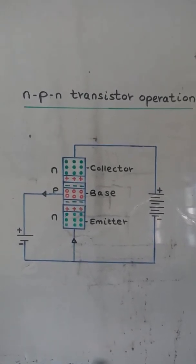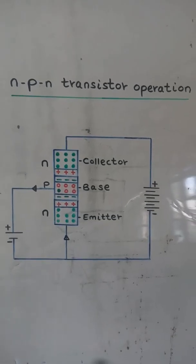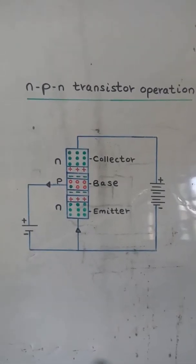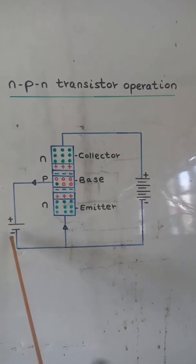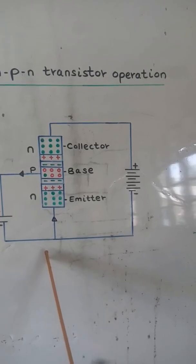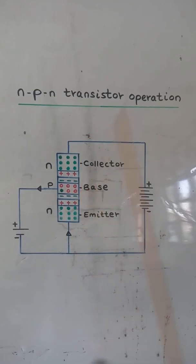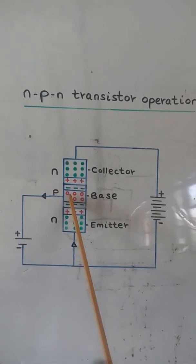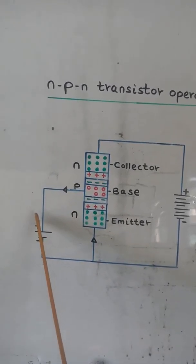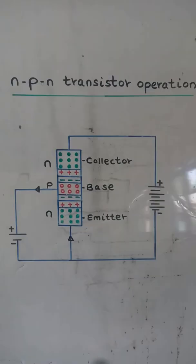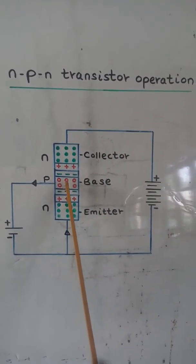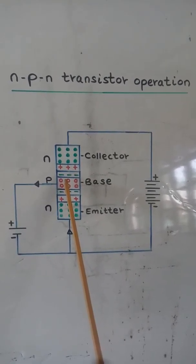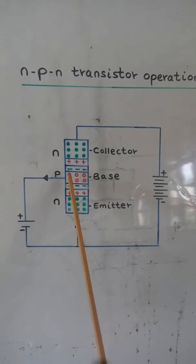This creates another hole, and another electron enters the junction. Another electron leaves the negative terminal of the battery and enters the emitter. Another electron leaves the junction and enters the positive terminal of the battery, creating another hole in the base region. The base region is made very thin and lightly doped.